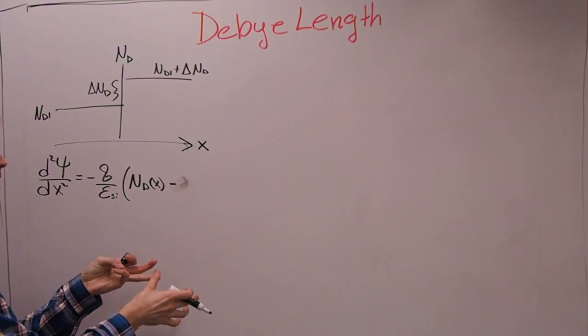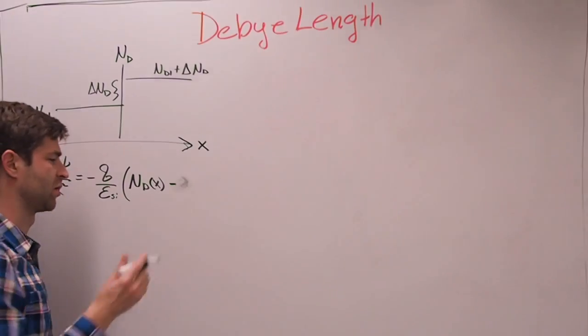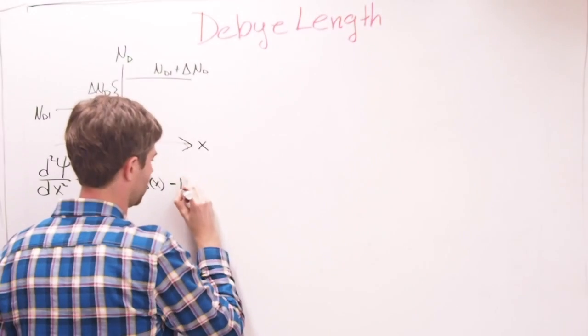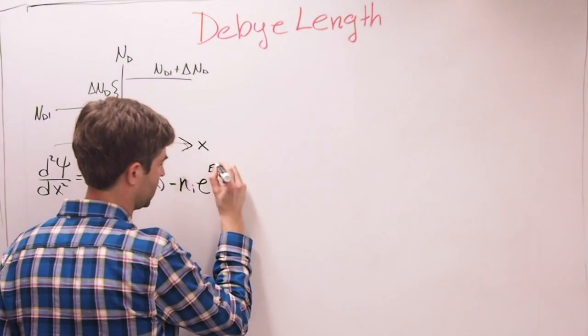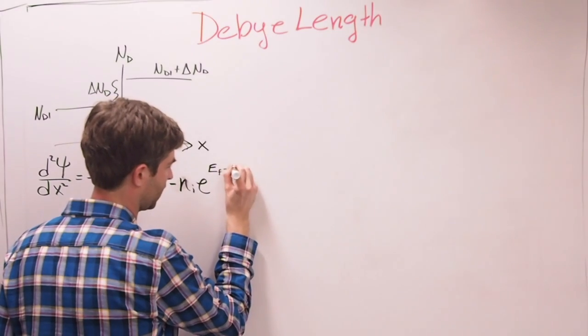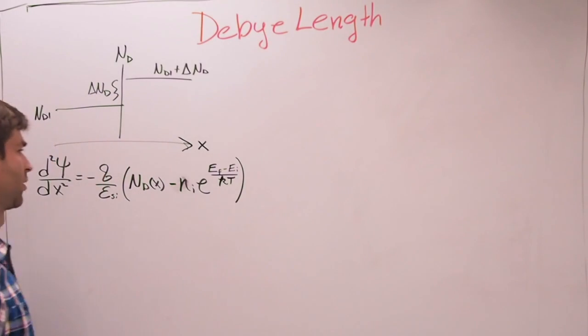Our positive charges are our ionized donors. We assume 100% ionization and non-degenerately doped semiconductor. And that's going to be ND of X minus our electron concentration, because we assume there's no acceptor concentration.